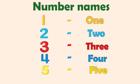So let us revise again. 1 — O-N-E, 1. 2 — T-W-O, 2. 3 — T-H-R-E-E, 3. 4 — F-O-U-R, 4. 5 — F-I-V-E, 5.